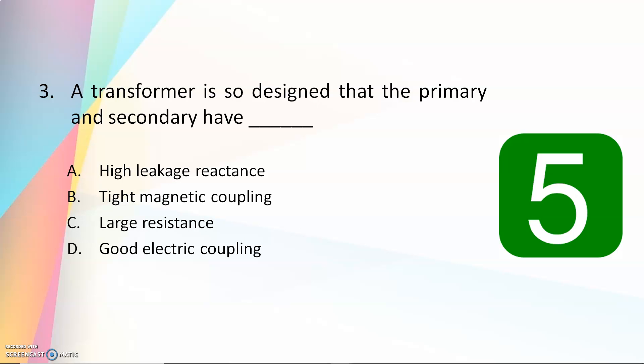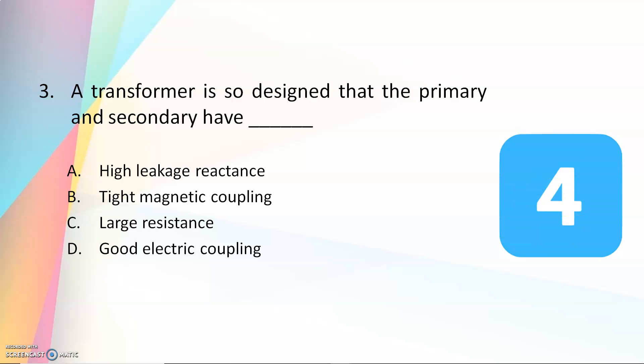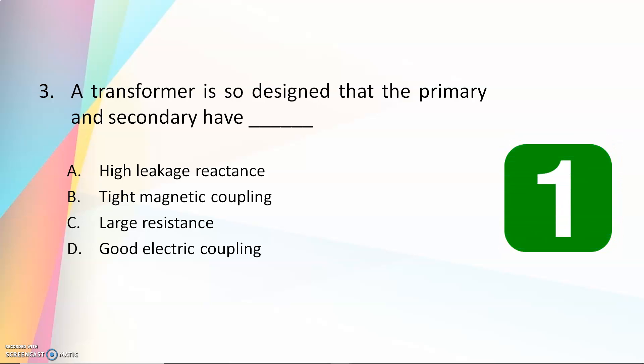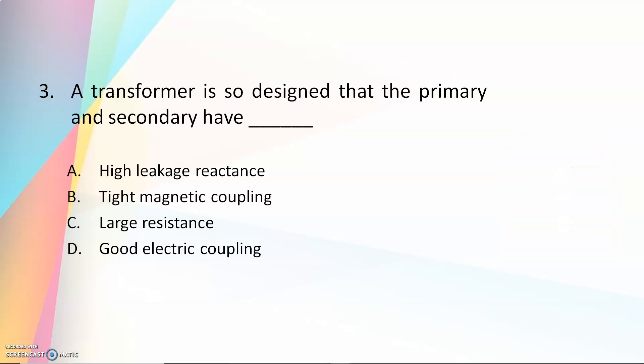Third question: a transformer is so designed that the primary and secondary have — high leakage reactance, tight magnetic coupling, large resistance, or good electric coupling. The answer is tight magnetic coupling. The working principle is electromagnetic induction, so it requires a high magnetic coupling between the primary and secondary.